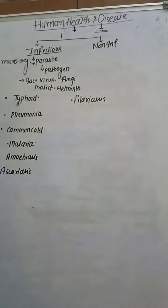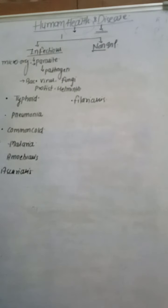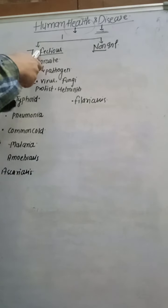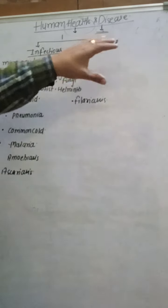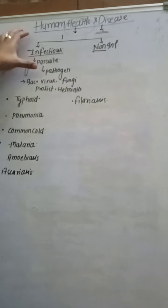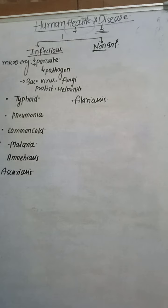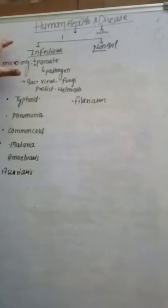Disease is a condition when one or more organ systems fail to function properly and there is appearance of some symptoms - that condition is called disease. Disease is classified into infectious and non-infectious. Infectious means it transfers from one person to another. Non-infectious is not communicable and does not transfer from one to another. Infectious diseases are mainly caused by microorganisms - protists, bacteria, viruses, and fungi.